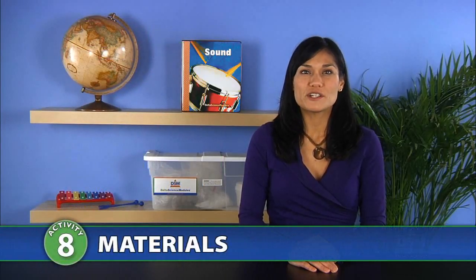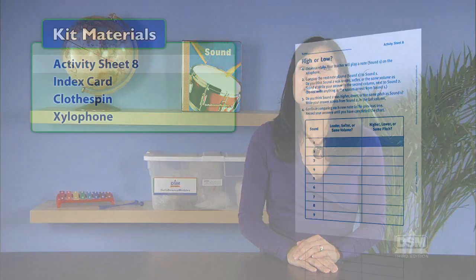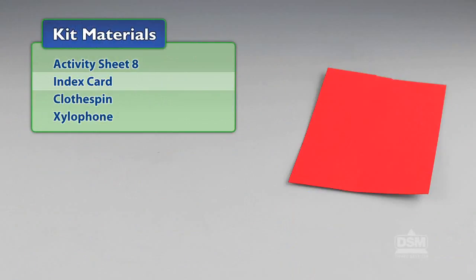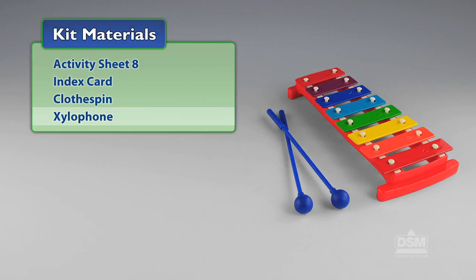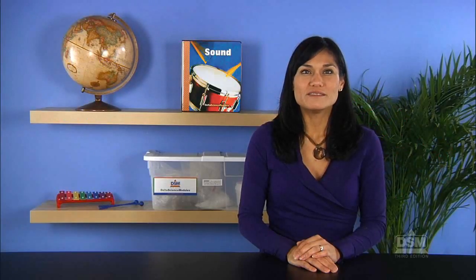You will need the following materials from the kit: Activity sheet 8, index card, clothespin, and a xylophone. You will also need to provide a bicycle.